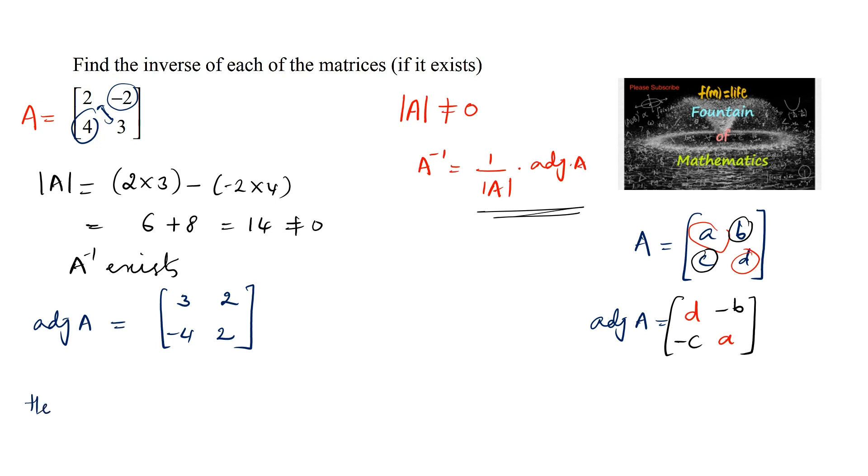Hence A inverse equals 1 by det(A), which is 14, times the adjoint of the matrix, which is [3, 2; -4, 2].